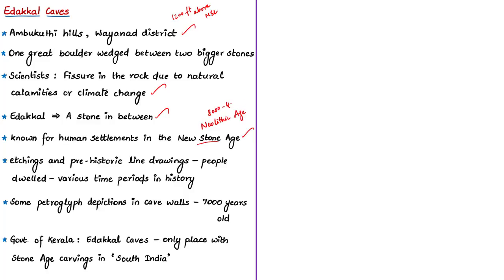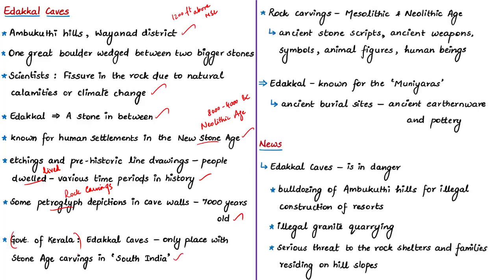One can see etchings and prehistoric line drawings on the walls of these caves. These drawings and carvings show that people dwelt here during various time periods in history, indicating the presence of ancient human settlements. Some petroglyph depictions — that is, rock carvings — on the cave walls are almost 7000 years old. According to the state government of Kerala, Edakal Caves is the only place with Stone Age carvings in South India. The rock carvings belong to Neolithic and Mesolithic Age, with Mesolithic Age roughly placed between 10,000 BC to 8,000 BC. These carvings include ancient stone scripts, ancient weapons, symbols, animal figures and human beings.